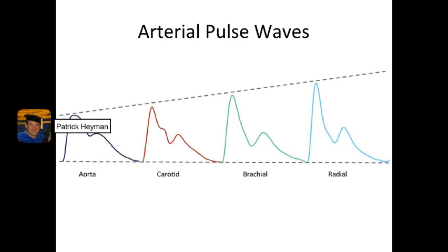The pulsatile elements — if you take a look at this particular slide, what you're going to see is a waveform: the aortic waveform, the carotid waveform, the brachial waveform, and the radial waveform. You'll notice slight changes as you go from a central artery down to a muscular artery. When we take a blood pressure at the brachial artery, we're taking the peak and the trough — and that's all. We're getting rid of the rest of the information that this pulse wave provides. There's a lot more information that can be obtained if you actually measure waveforms, as opposed to simply the peak and trough. So the pulsatile elements are the actual shape and contour of this wave.